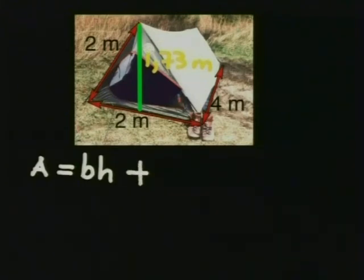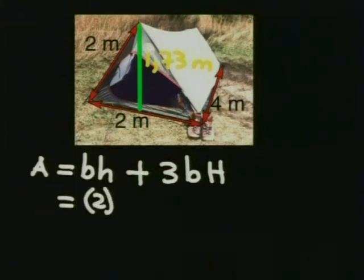And we add 3 base times height of the rectangle. When we substitute the points, we know that the base of the triangle is 2 meters, multiplied by the height, which is 1.73.